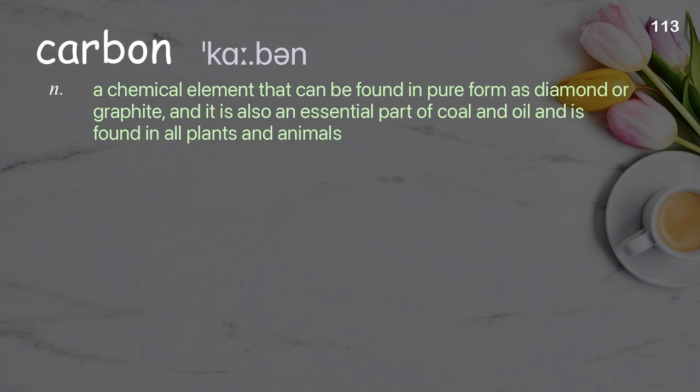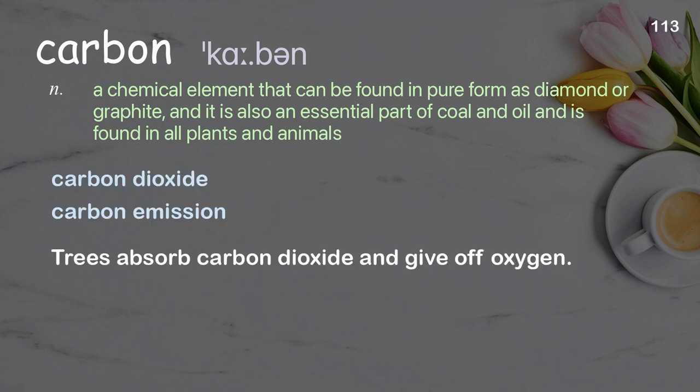Carbon: A chemical element that can be found in pure form as diamond or graphite; it is also an essential part of coal and oil and is found in all plants and animals. Examples: Carbon dioxide. Carbon emission. Trees absorb carbon dioxide and give off oxygen.